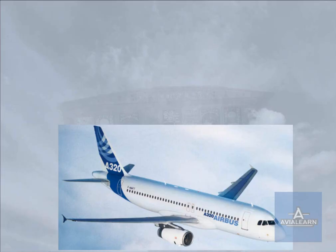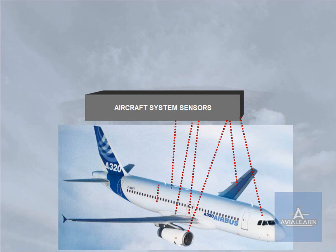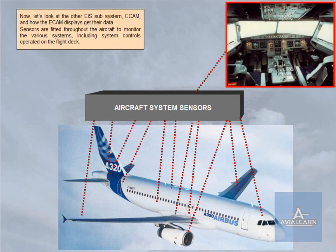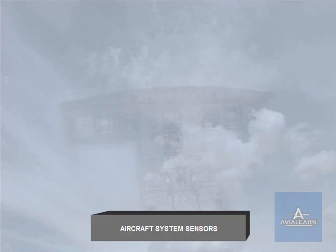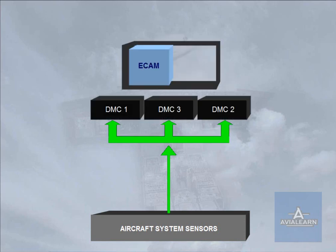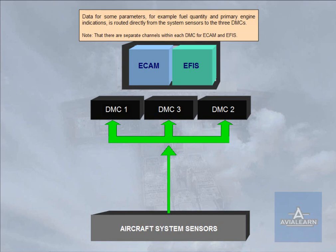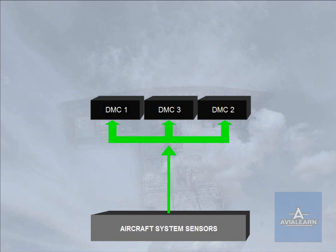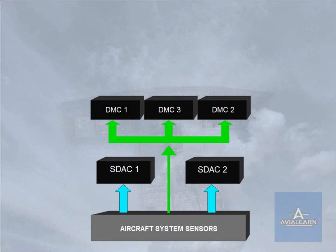Now let's look at the other EIS subsystem, ECAM, and how the ECAM displays get their data. Sensors are fitted throughout the aircraft to monitor the various systems, including system controls operated on the flight deck. Data for some parameters — for example, fuel quantity and primary engine indications — is routed directly from the system sensors to the three DMCs. For the majority of the systems, the sensors supply data to two system data acquisition concentrators, SDACs. The SDACs acquire system data, process it, and send some of it as system page data to the three DMCs.